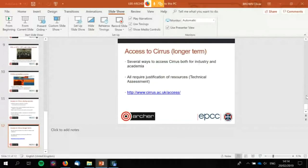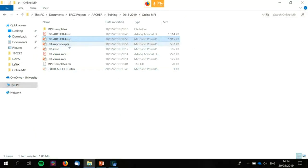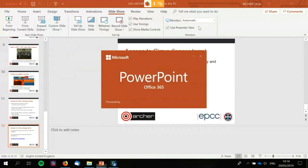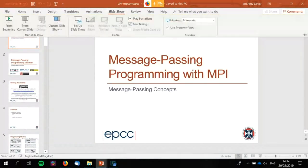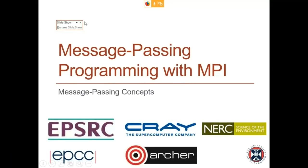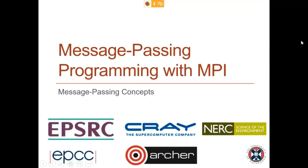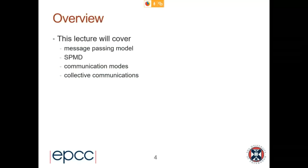That takes me to the end of our welcome slides. Now we'll get started on message passing concepts, which is the first proper lecture of our course. We're going to start by talking not about MPI itself, but about the programming model on which it relies, which will hopefully make the explanation of the actual interface make more sense later on. So: message passing programming. We're going to cover the message passing model, SPMD — Single Program Multiple Data — communication modes, and collective communications.